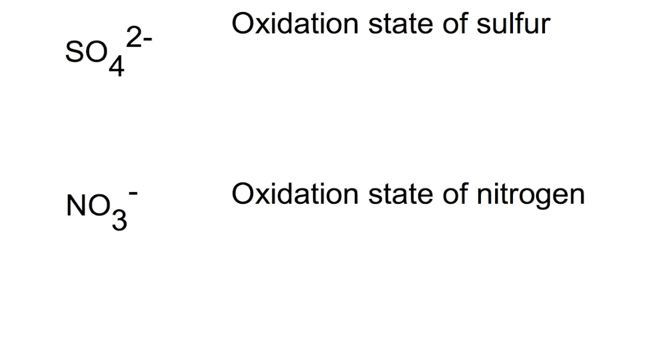So here we have two polyatomic ions, so we've got sulphate and nitrate. To work out the oxidation state, we need to write out a small sum. So if we start with the overall charge. We have two minus,